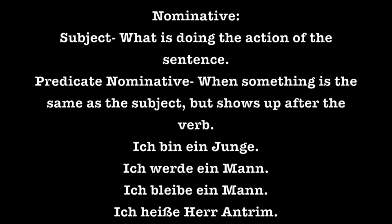Here are some examples using the nominative case. In this sentence, I and the boy are both in the nominative case because forms of sein will not take an accusative. Ein Junge is actually a predicate nominative as it comes after the verb, but it's still in the nominative case. Ich werde ein Mann — I become a man. Ich is the subject, but ein Mann is a predicate nominative. Werden will also not take an accusative.